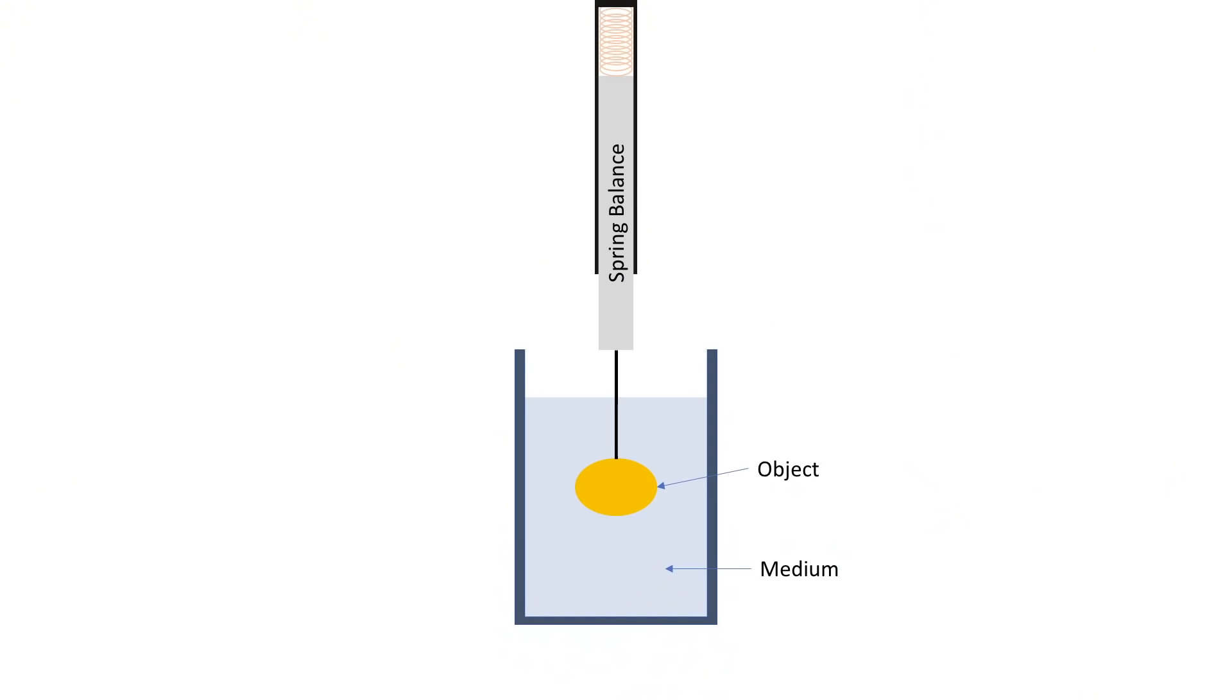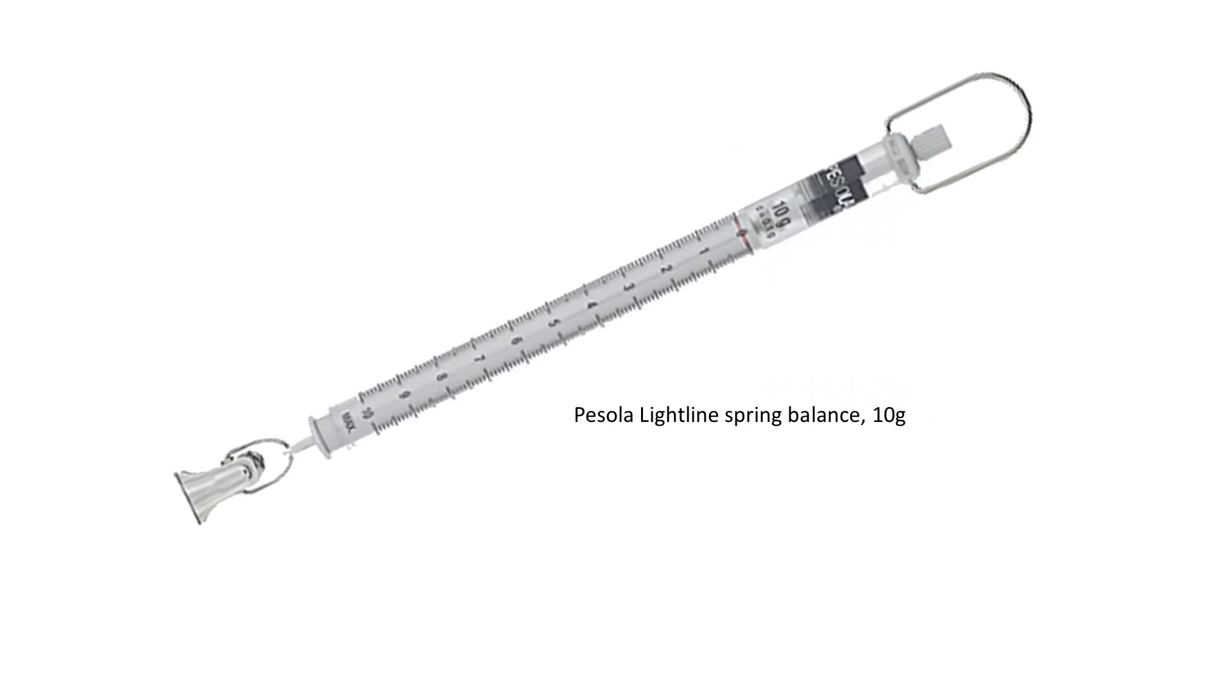This is an egg. This experiment is simple. We suspend an object in a medium and then measure the force on the object whilst changing the medium's density. To measure the force, we use a Persola-Lightline spring balance with a range of 10 grams, and we can multiply this by 9.81 to get the force in Newtons. The range of forces that we can measure then goes between 0 and 98.1 millinewtons.